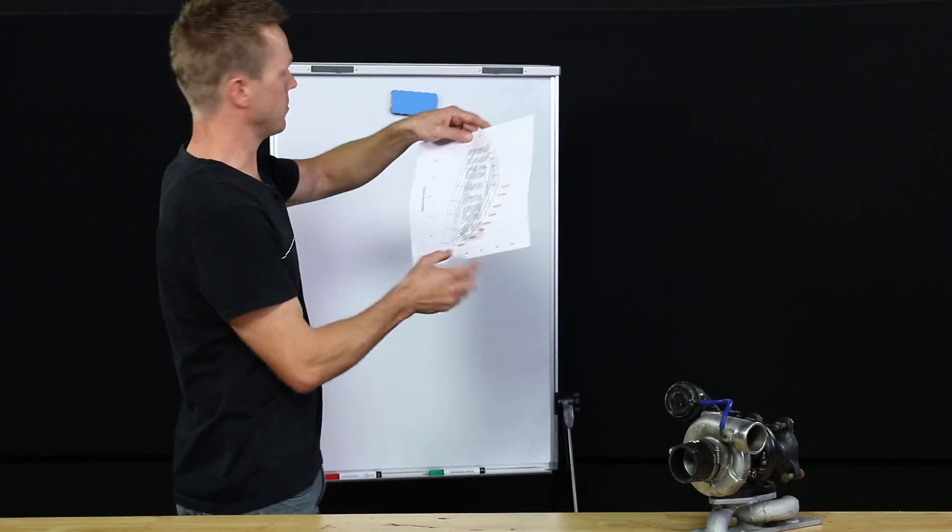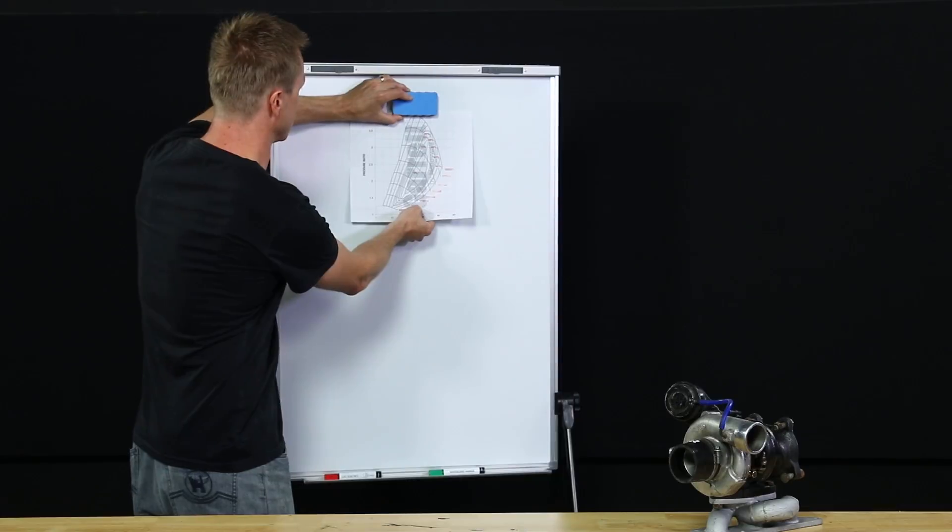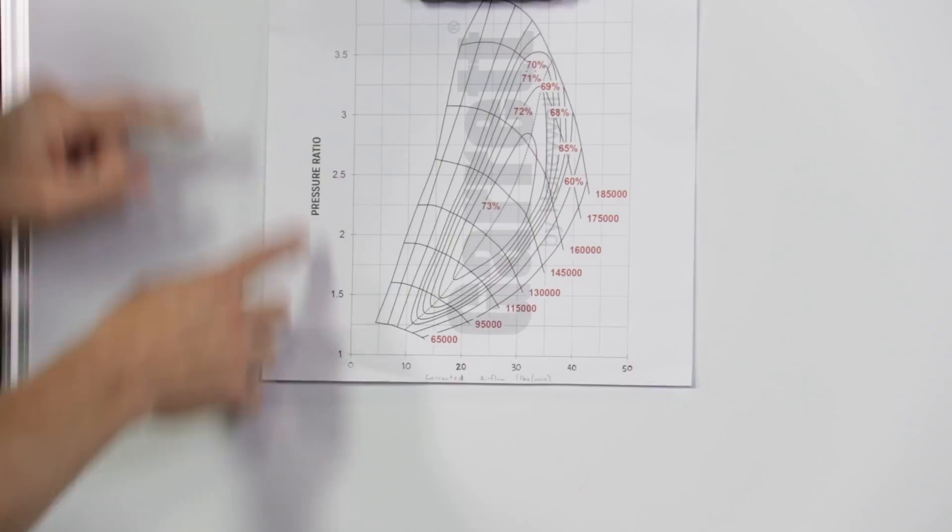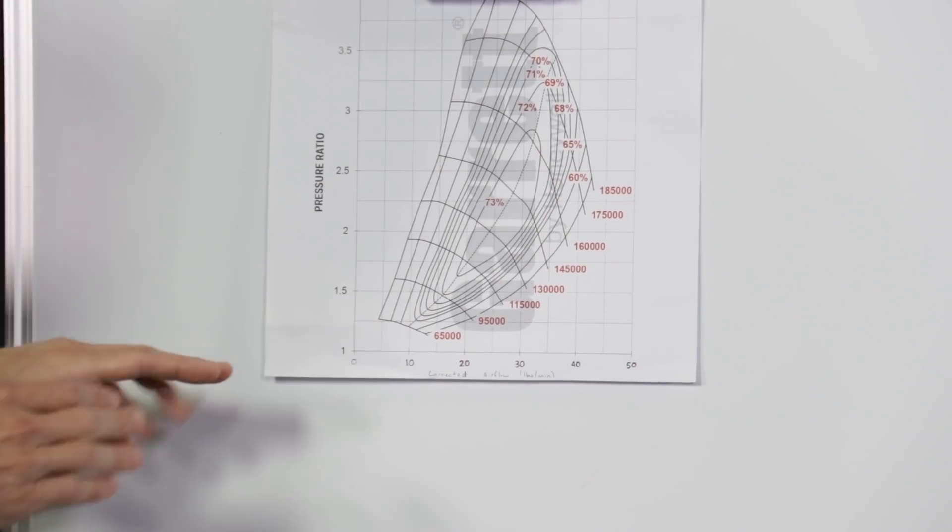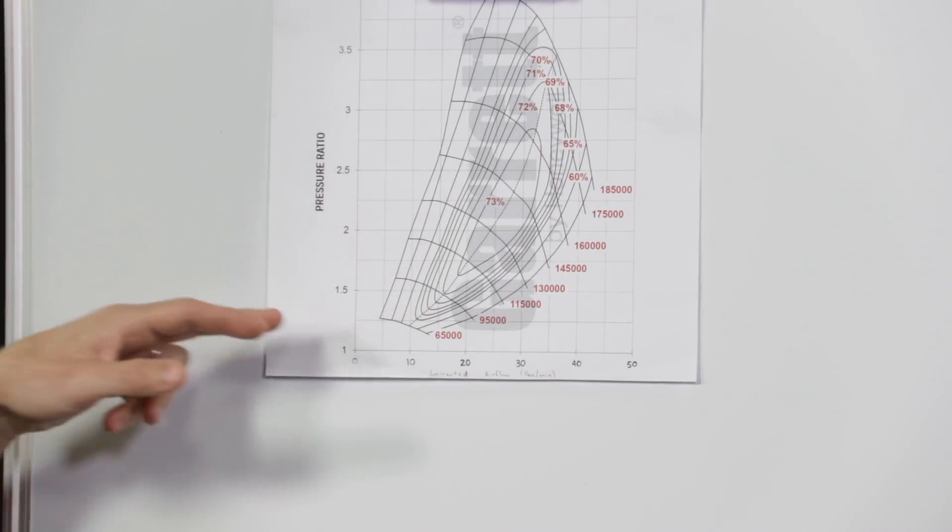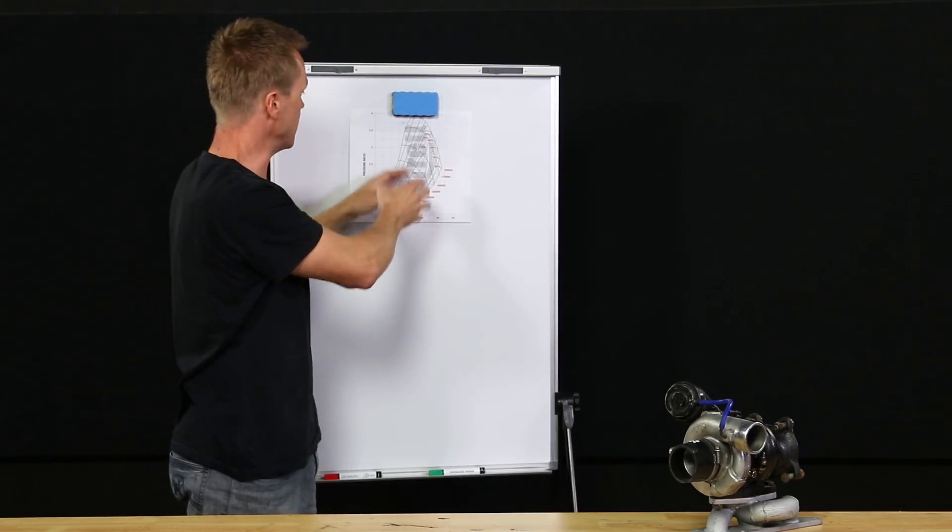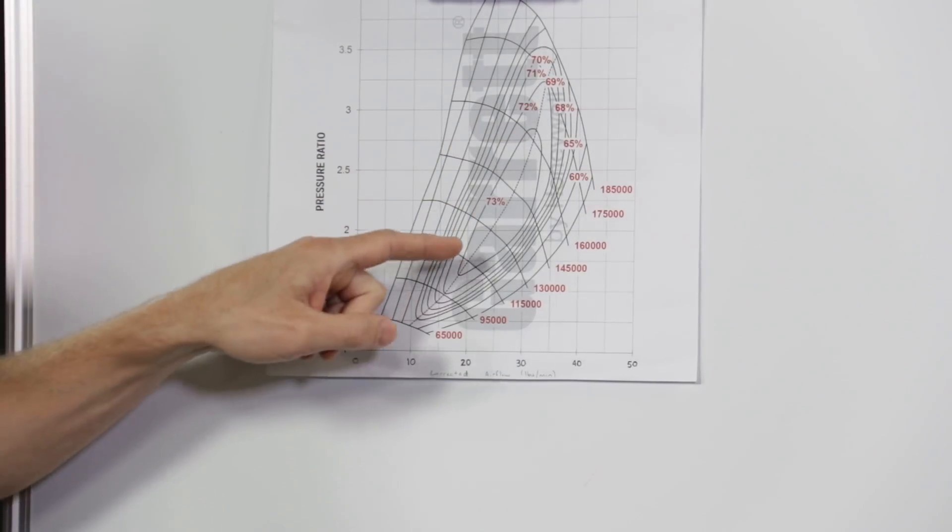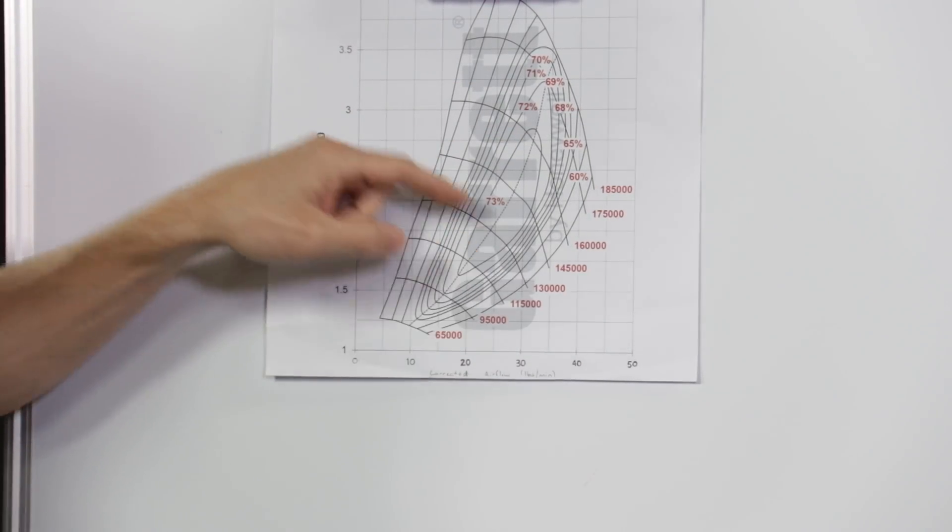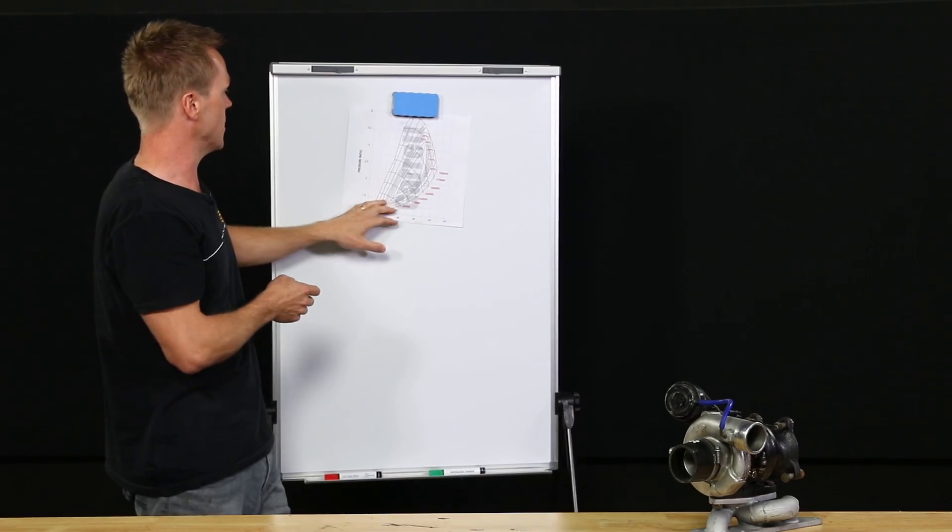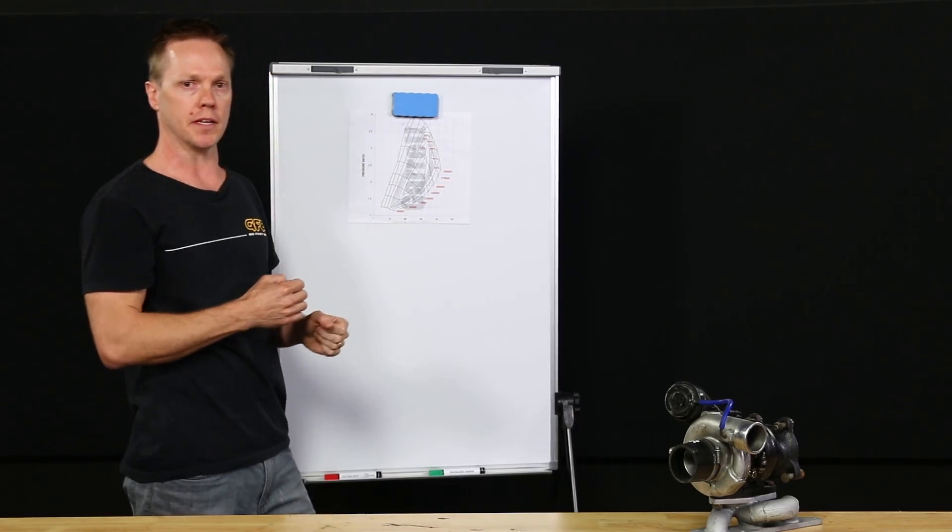Alright, so we're going to start by having a quick look at the compressor map itself. This is basically the operating area of the compressor. So down here we have pressure, we have engine airflow along this axis, and this is basically where you want your turbo to be operating. So we have efficiency islands, turbine RPM, there's a surge line and a choke line. So we'll take a look at these one by one and explain what they all mean.